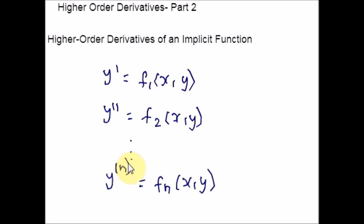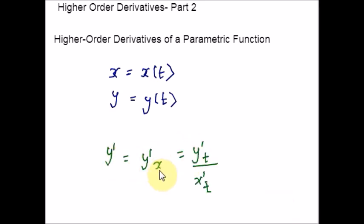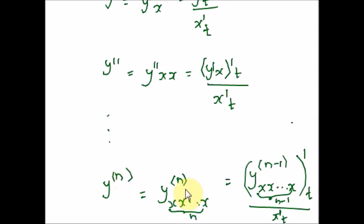Now let us see higher-order derivatives of a parametric function. Consider a function y = f(x) given parametrically by x = x(t) and y = y(t). The first derivative is given by y' = y'(t) / x'(t). Differentiating once more with respect to x, we find the second derivative. If we keep on differentiating similarly, we define derivatives of higher order, and this is how the nth order derivative will look like.